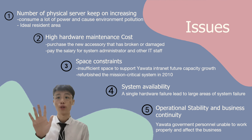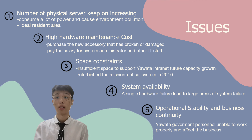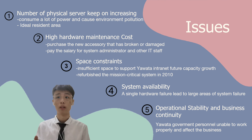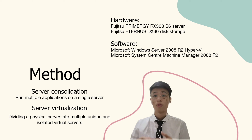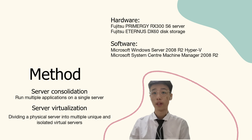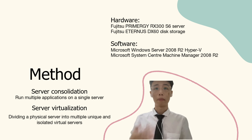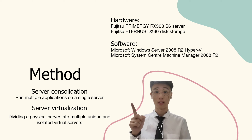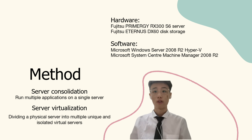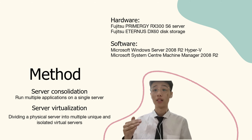The last issue is operation stability and business continuity. If the Yawata Intranet is not stable, the Yawata government personnel will be unable to work properly and it will affect the business. The method to solve the issue is server consolidation and server virtualization. Server consolidation means we run multiple applications on a single server. By doing so, we can solve the main problem, which is to reduce the number of physical servers needed.